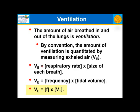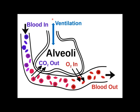VE, or minute ventilation, is the respiratory rate times the size of each breath — frequency times tidal volume — often abbreviated as frequency times VT, where VT is tidal volume and VE is minute ventilation. Oxygen comes in by ventilation and is removed by blood flow. So the concentration of oxygen in the alveolus is determined by the dynamic equilibrium between the amount entering by ventilation and the amount removed by perfusion.